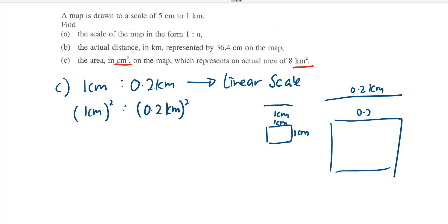That's how we come to the fact. Always understand the logic behind the question. So we will have 1 cm square is to 0.04 km square. This is the scale for area.